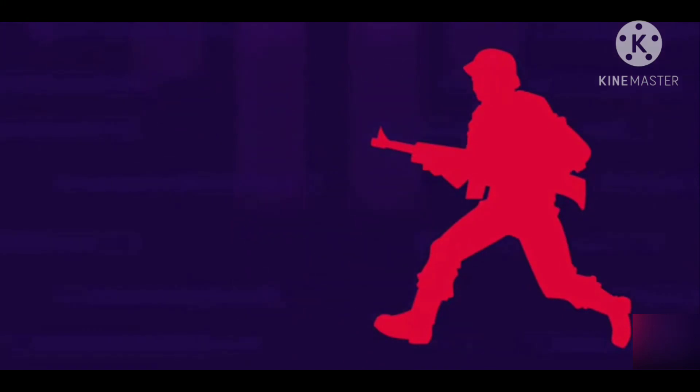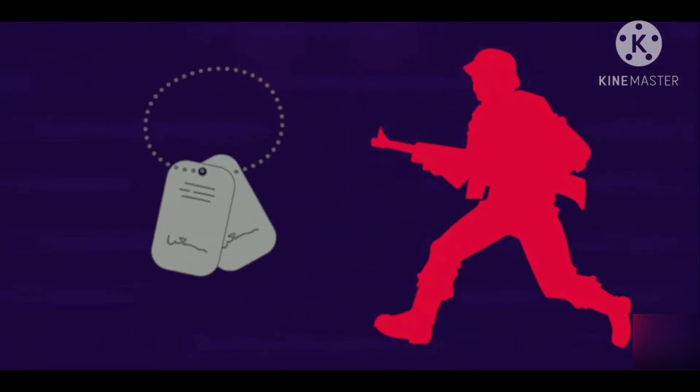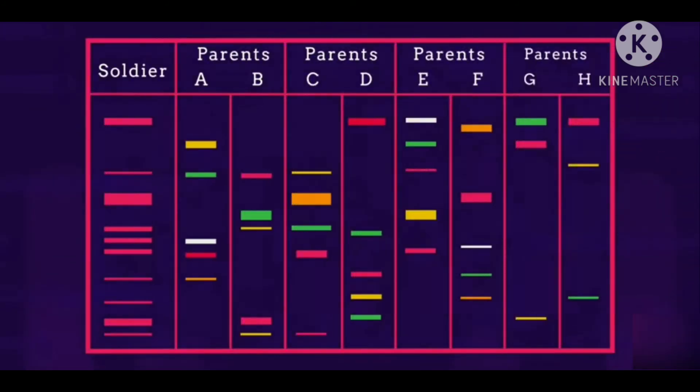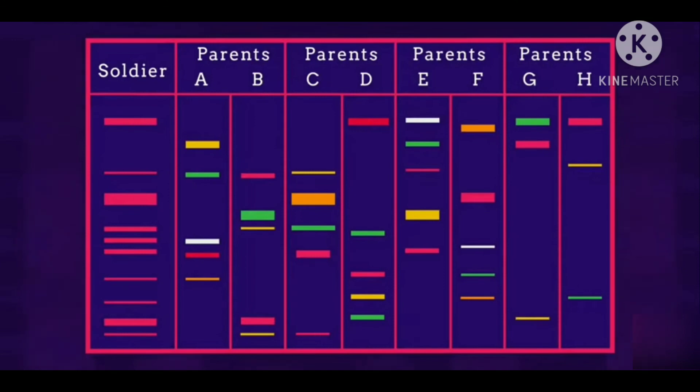Let's try another. A soldier has been killed in an explosion and has lost his dog tags that identify him. Three soldiers are missing from their unit so the army asks for three sets of parents for a DNA sample so that they might compare it to the soldier's DNA and therefore make an identification. Remember, the soldier will only share half of his DNA with each parent. So which set of parents is the soldier the son of? Pause the video while you decide.